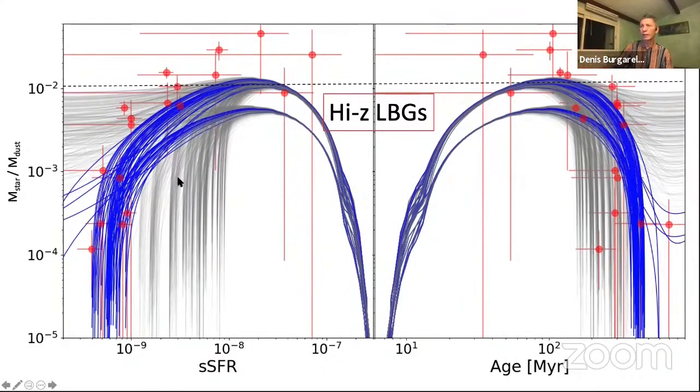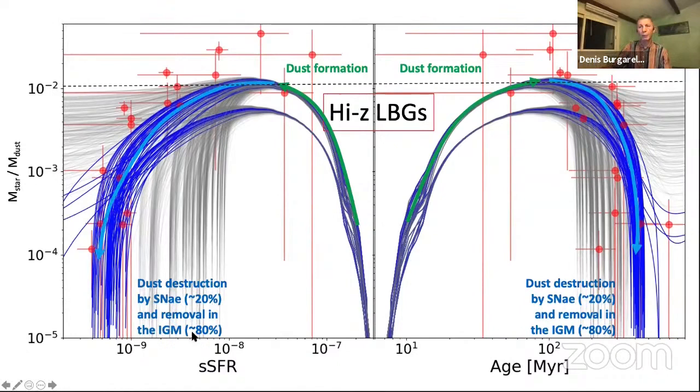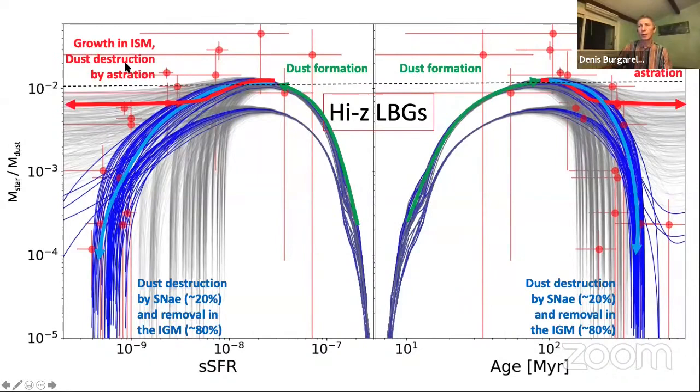We modeled this using a lot of models. We fitted the models, and the summary is that you have specific star formation rate on the left and age on the right. You build dust quite fast here at low age or high sSFR. Then the dust is destroyed by supernovae, about 20%, but mainly removed by outflows into the intergalactic medium. If you assume grain growth in the ISM or accretion, it would go this way—that's for another type of objects, not these high-redshift LBGs. You notice there are two main groups of curves; the top one is for a top-heavy IMF, and it seems to work better for our objects.